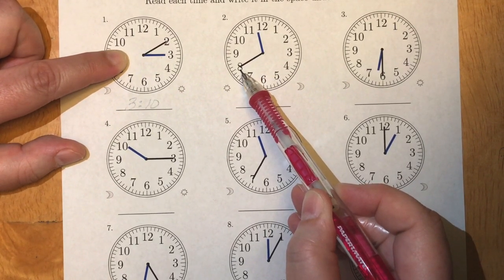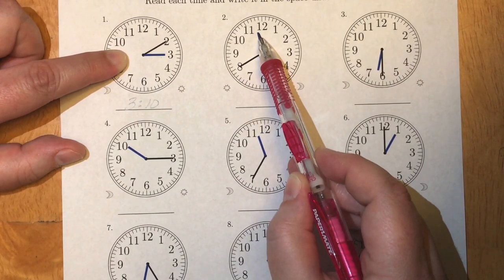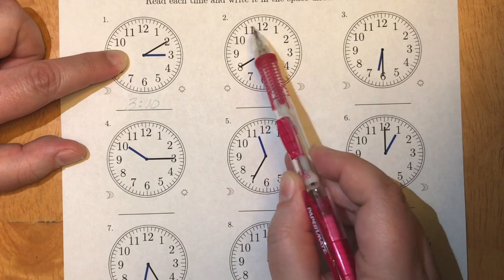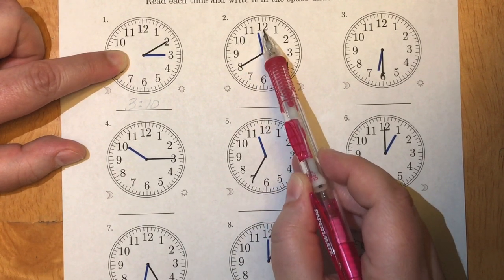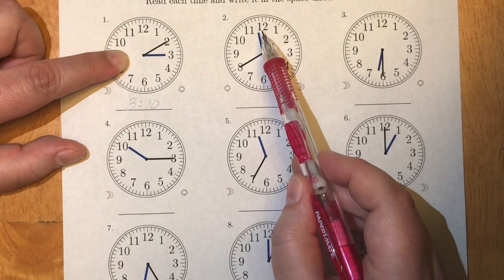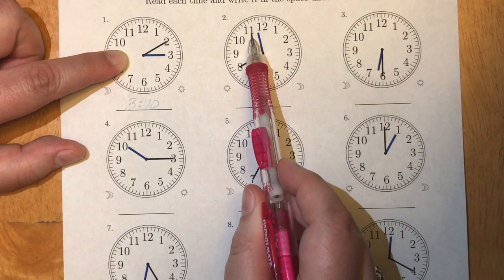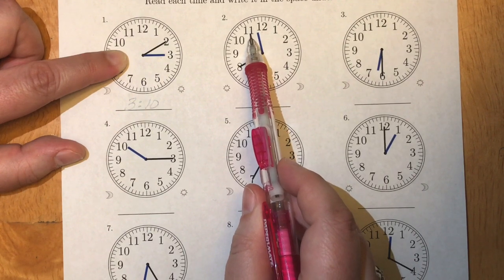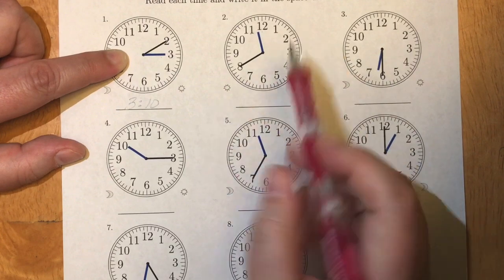What hour are we at? Well if we look at our hour hand now the hour hand is between two numbers. It's between 11 and 12. Since it's not on the 12 yet, it's not quite 12 o'clock. So I'm gonna look at the lower of the two hours. So I'm gonna pick the 11. So it's 11:40 on this clock.